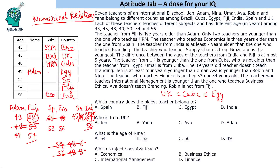Using the condition that Jen is at least 4 years younger than Umar, we note that Umar is 48, so Jen cannot be more than 44. The teacher who teaches finance is neither 53 nor 54 years old, so those two are not finance. That means Adam, who is 49, teaches finance. The teacher who teaches international management is younger than the one who teaches business ethics, so the younger slot gets international management and the older gets business ethics.